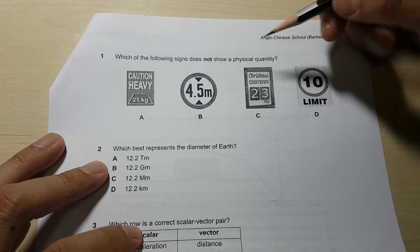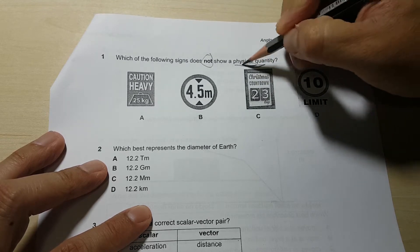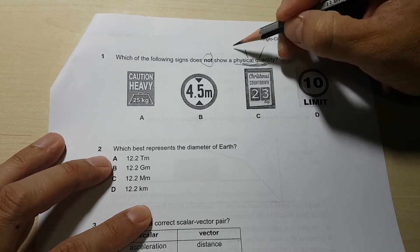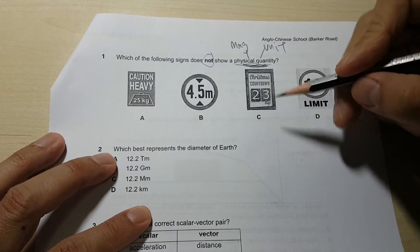First question, let's look through it. Which one does not? You gotta read the question properly - show a physical quantity. Physical quantity, as we have learnt before, consists of both things: magnitude and unit.